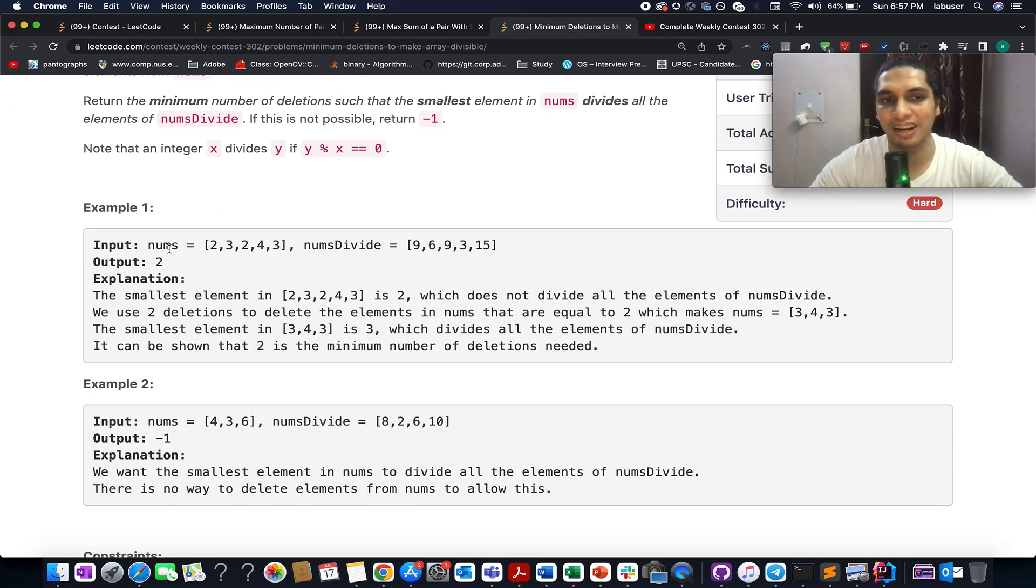So here they have provided us an example wherein the nums array is 2, 3, 2, 4, 3 and nums divide is something like this. I'll be walking you through this example as well as the algorithm while the presentation. So let's quickly hop onto it.